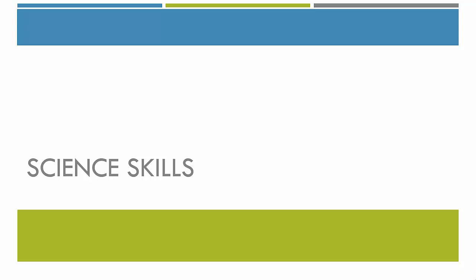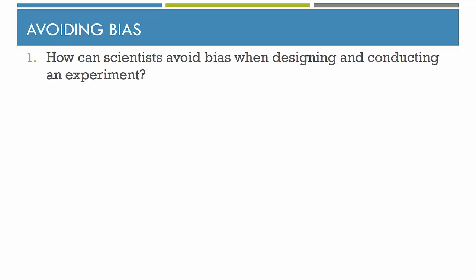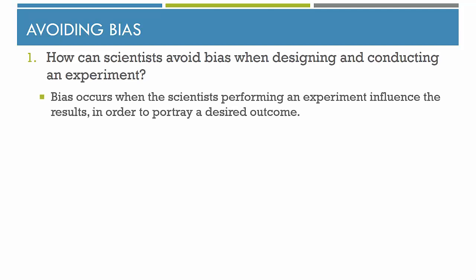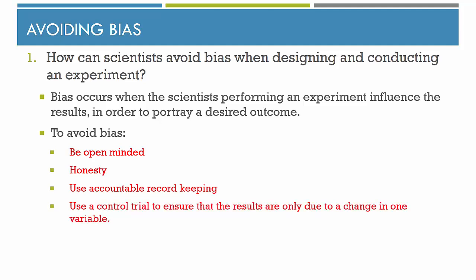The first section is about some science skills. How can scientists avoid bias when designing and conducting an experiment? Bias occurs when the scientist performing an experiment somehow influences the results in order to portray a certain desired outcome. In order to avoid bias, the scientist should remain open-minded, be honest, and use accountable record-keeping. Additionally, the use of a control trial can help ensure that the results are only due to a change in one variable.